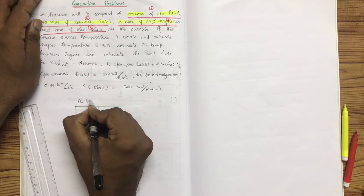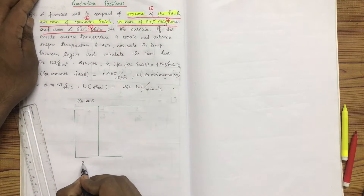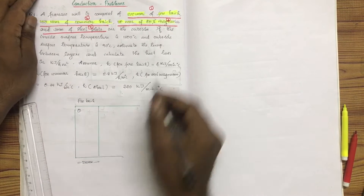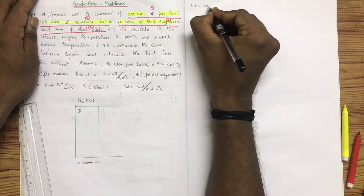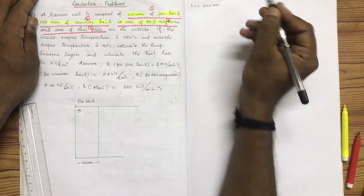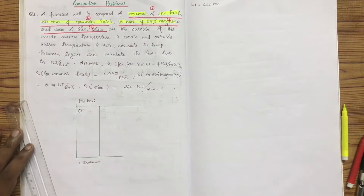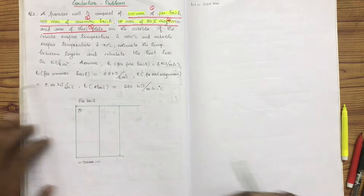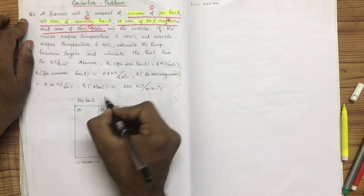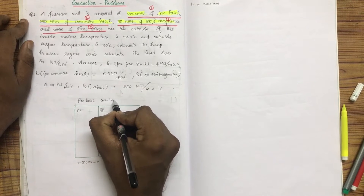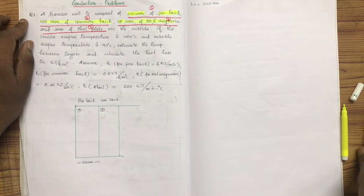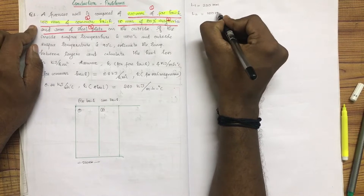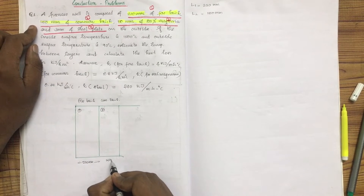The dimensions vary: 250mm for fire brick, 50mm for common brick. The common brick is 150mm. L2 is 150mm.